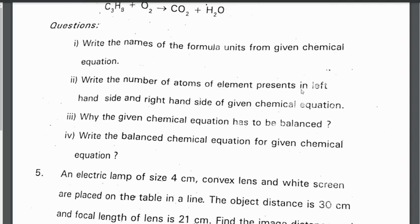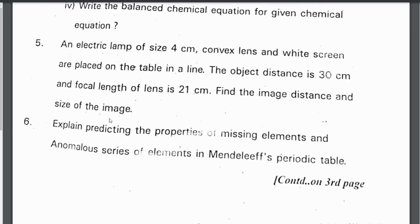Write the number of atoms of each element present in the left-hand side and right-hand side of the given chemical equation. Why does the given chemical equation have to be balanced? Write the balanced chemical equation for the given chemical equation.